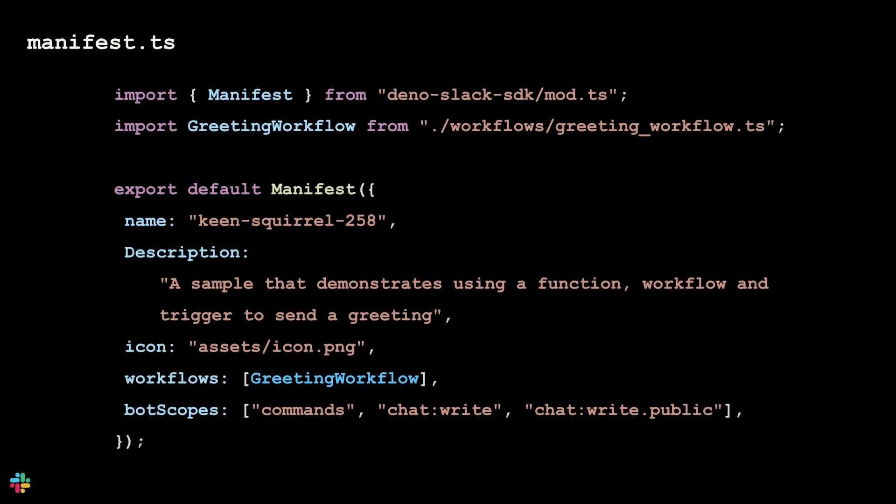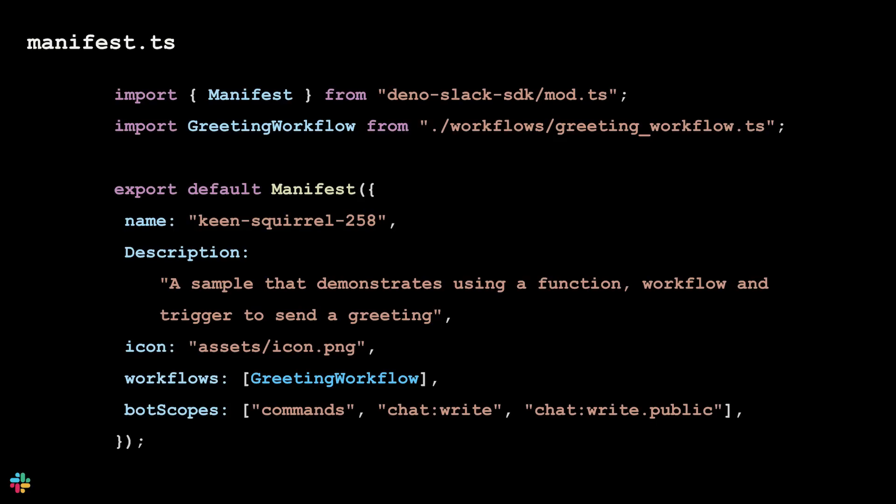So what are we looking at? The manifest.ts file is the centralized place for your app's configuration. The manifest object contains basic information about your app such as its name and description, which are then exported so that the properties can be used throughout the app. The manifest.ts file also contains information about the more functional components of your app.